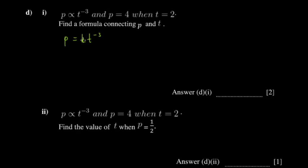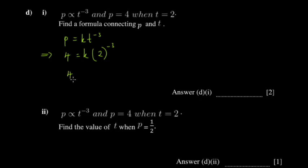When asked to find the formula connecting the variables, you need to find the constant k so you can substitute it in. You're told that when p equals 4, t equals 2. We substitute these values in: putting t equal to 2 and noting the power is negative 3.